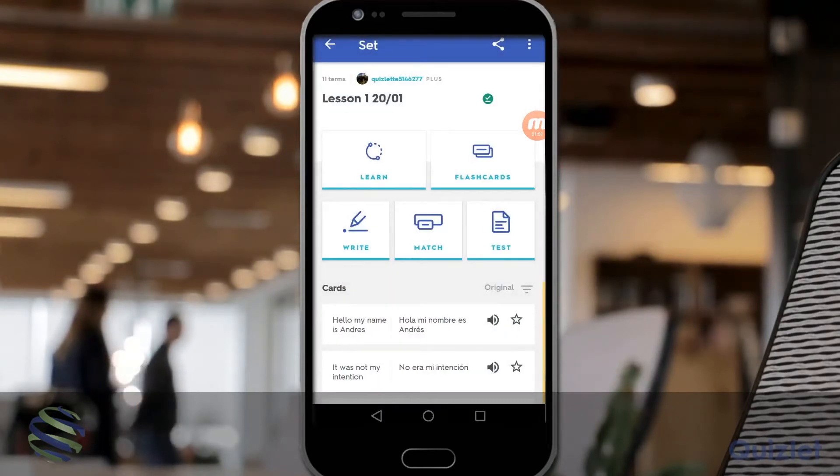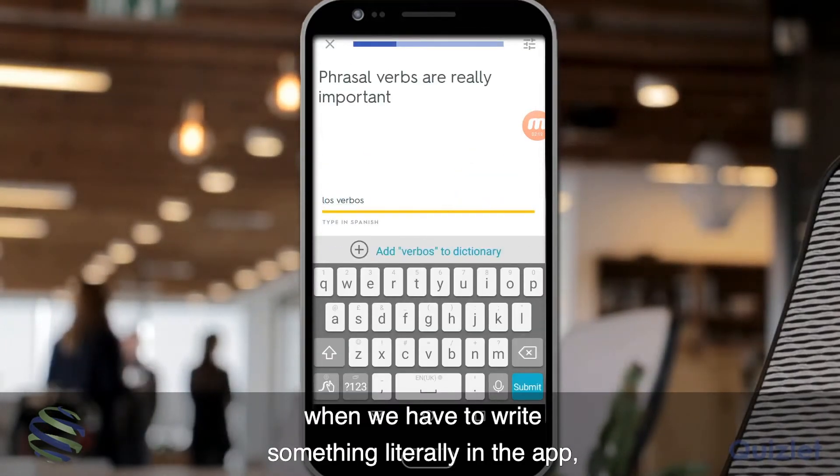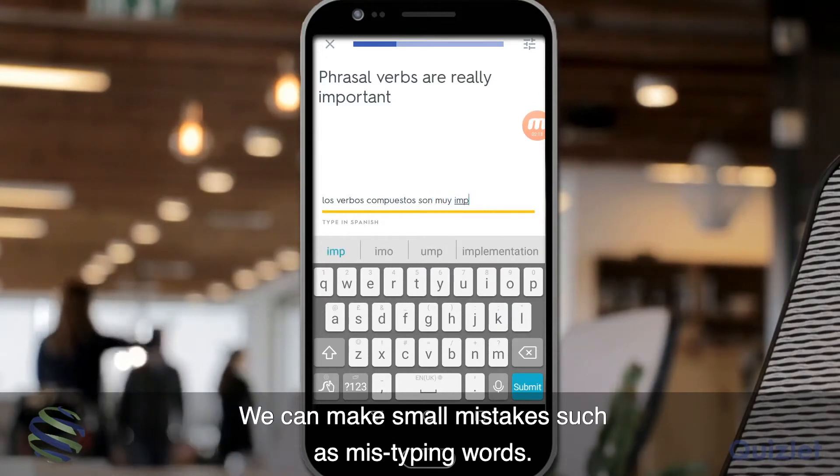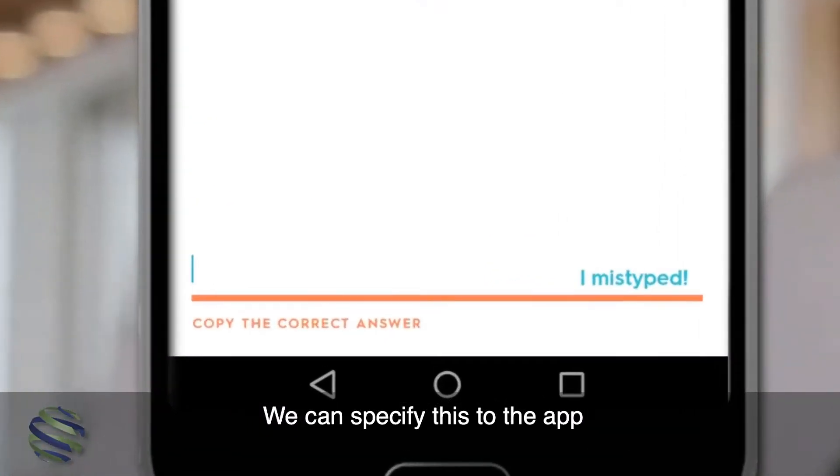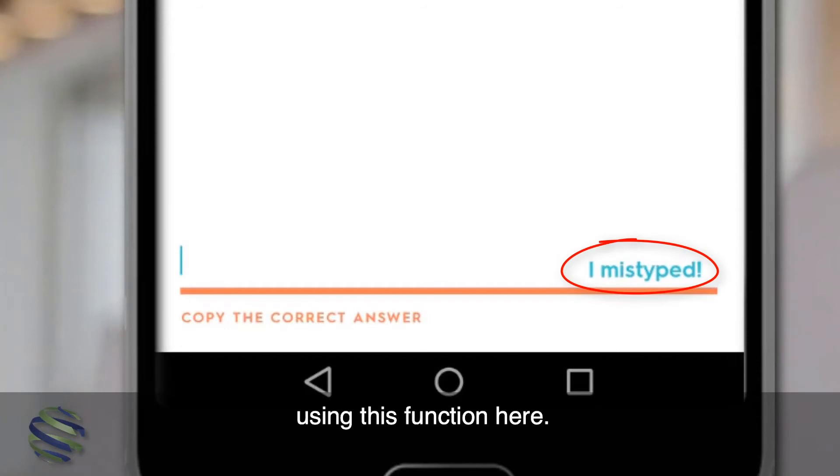Sometimes when we have to write something literally in the app we can make small mistakes as mistyping words. We can specify this to the app using this function here.